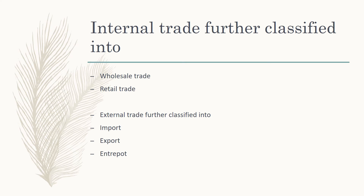Entrepot trade means buying goods for the purpose of exporting them. For example, some countries import goods from one country and, instead of using those goods themselves, they sell them to another country. They do not manufacture the goods — they simply buy from one country and sell the same goods to another. That is the meaning of entrepot trade.